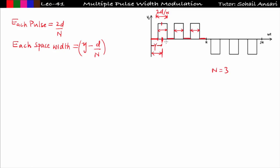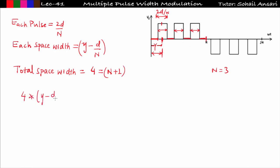For three pulse widths we are getting four space widths, so the total number of space widths equals n+1. Now the total space width is (n+1) × (gamma − d/n), and the total pulse width per half cycle is n × (2d/n) = 2d. For n = 3, total pulse width equals 2d. The sum of total space width and total pulse width equals pi.